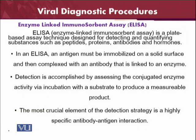Now, our main topic is the enzyme-linked immunosorbent assay, which is ELISA. ELISA is a plate-based technique designed for detecting and quantifying substances such as peptides, proteins, antibodies, and hormones. In an ELISA, an antigen must be immobilized on a solid surface and then complexed with an antibody that is linked to an enzyme. Detection is accomplished by assessing the conjugated enzyme activity via incubation with a substrate to produce a measurable product.